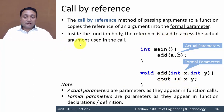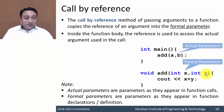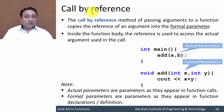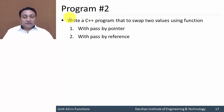Inside the function body, the reference is used to access the actual argument used in the code. When the function is called, the value of a will be copied to x and the value of b will be copied to y. But if we want to access a and b directly, or access their location in the function body, we need to use call by reference.